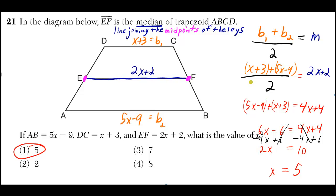EF is the median of trapezoid ABCD. And I also went ahead and labeled AB, DC, and EF. And they want to know the value of X.